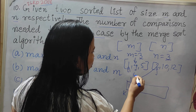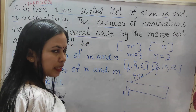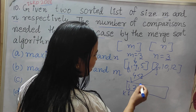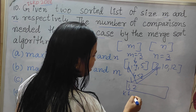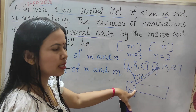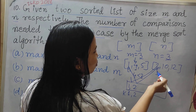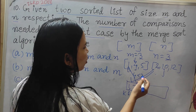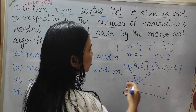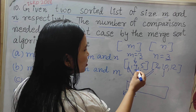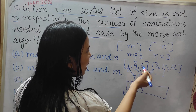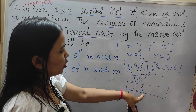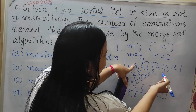Now the I pointer moves to 4. We compare 4 with 2 — is 4 less than 2? No. So J part increases and 2 is stored because 2 is lesser. That is the second comparison. Then 4 is less than 10 — yes. So 4 is stored from the I part and I is increased. J remains the same. So 4 and 10 — we are comparing 3 times and getting the third sorted element.